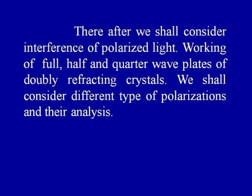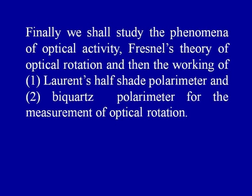We shall study the working of a Nicol prism. Thereafter we shall consider interference of polarized light, the working of a full wave plate, a half wave plate, and a quarter wave plate of doubly refracting crystals. We shall consider different types of polarizations and then their analysis. Finally, in the last lecture, we shall study the phenomena of optical activity, Fresnel's theory of optical rotation, and then the working of polarimeters — number one, the Lorentz half shade polarimeter, and the biquartz polarimeter — for the measurement of optical rotation.